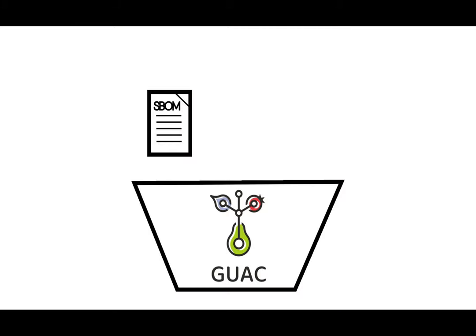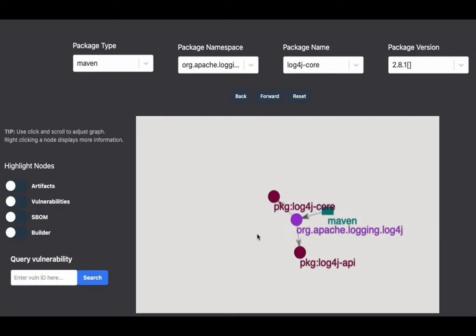When you ingest your SBOMs into GUAC, it collects information about unlisted dependencies, known vulnerabilities, OpenSSF Scorecard, and more. GUAC takes this data and builds a graph database so that you can see and explore relationships between all of the components in your software projects.